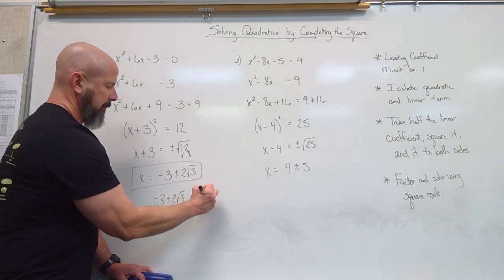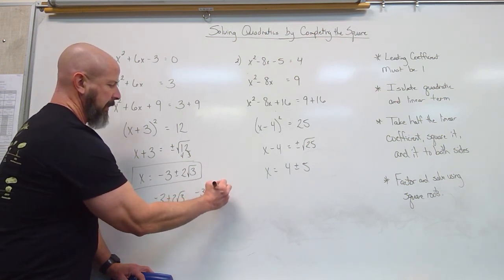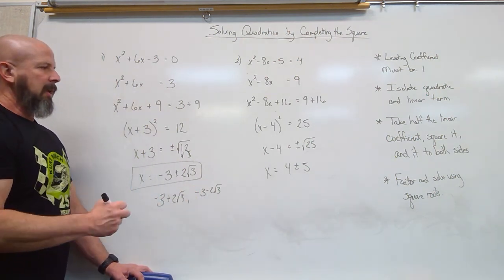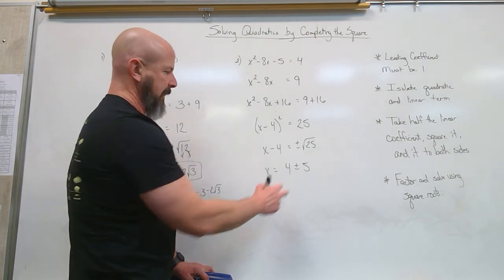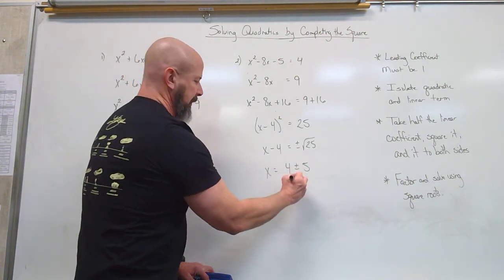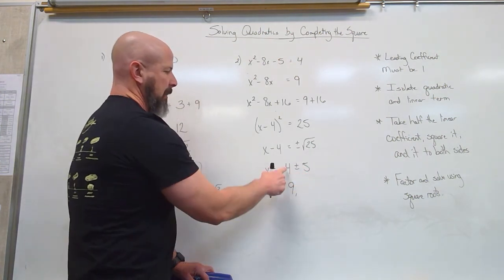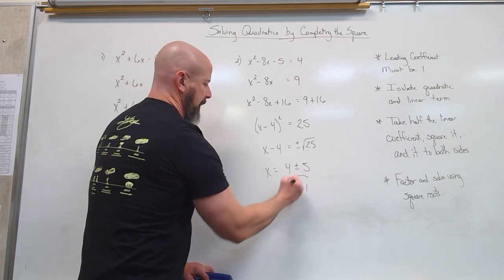I don't care if you leave the plus or minus in there. We could write two separate terms. But here, I can actually add and subtract. So I need to finish it out because I can combine them. 4 plus 5 is 9. 4 minus 5 is negative 1.